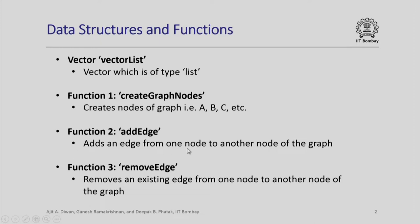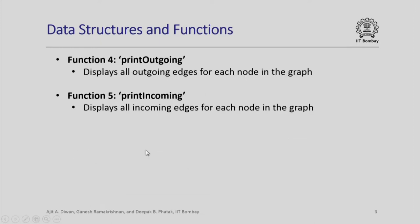Similarly, if there is a mistake or for some reason we have to remove an edge, we need a function to remove an existing edge from one node to another. We will of course need the ability to show the final graph. So we have two display functions: one showing outgoing edges and the other showing incoming edges.